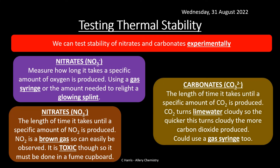For carbonates, we measure the length of time until a specific amount of CO₂ is produced. CO₂ turns limewater cloudy — the quicker it turns cloudy, the more carbon dioxide is being produced. We can also use a gas syringe to measure gas volume quantitatively. A more thermally stable compound will produce a smaller amount of gas; a less stable one will produce CO₂, NO₂, or O₂ much more quickly. We're essentially looking at the rate at which products are formed and using that as a measure of stability.